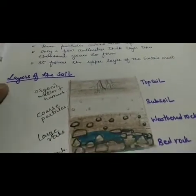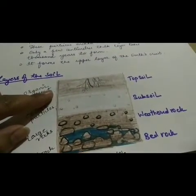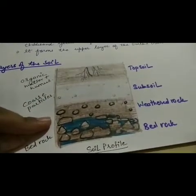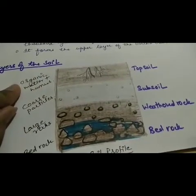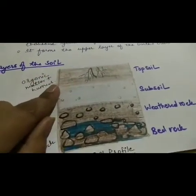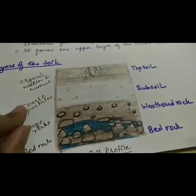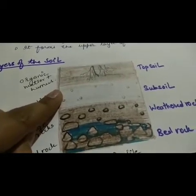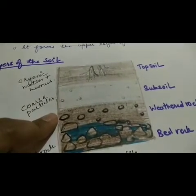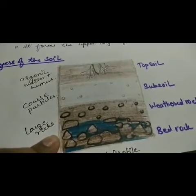Now we will move towards the next topic: layers of the soil. Layers of soil refers to how the soil exists below the earth's crust. In the upper part you can see the dark brown colored substance — that is the soil — but below there are layers of soil as shown in the diagram. The top soil contains organic matter and humus. Roots penetrate into the top soil and absorb nutrients from this layer, making it rich in organic matter and humus. Below that, the next layer is the subsoil, which contains coarse particles of rock.